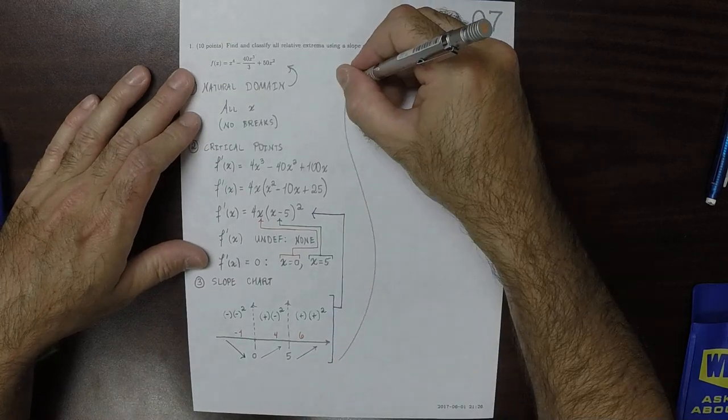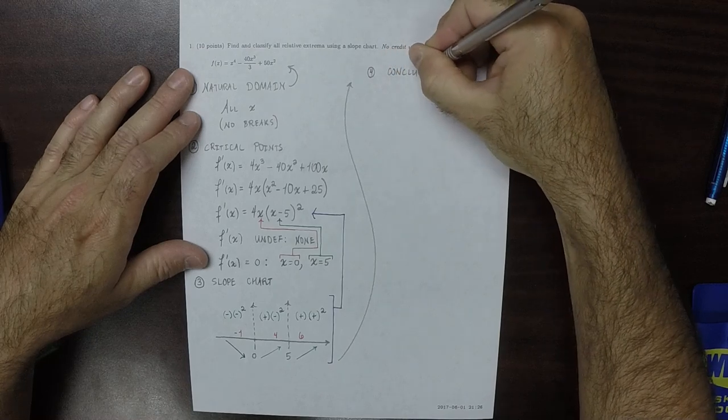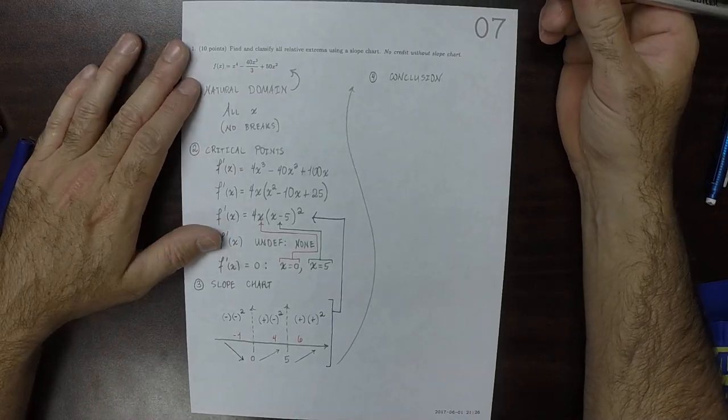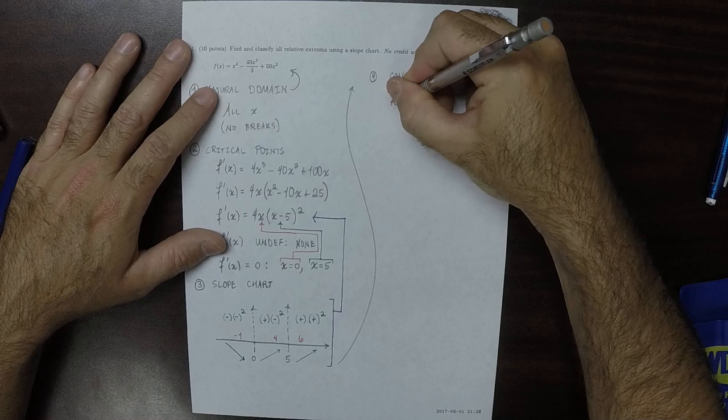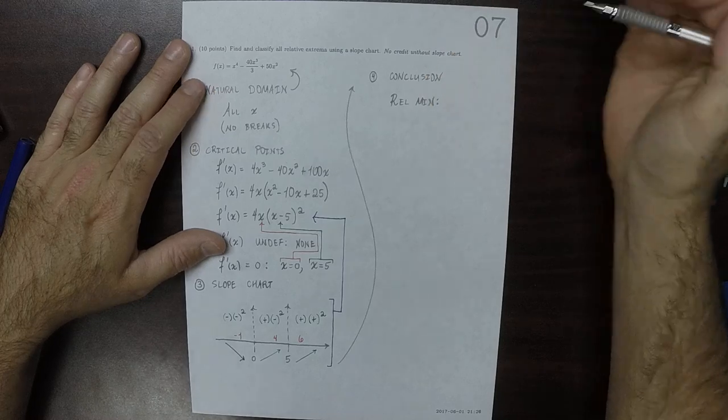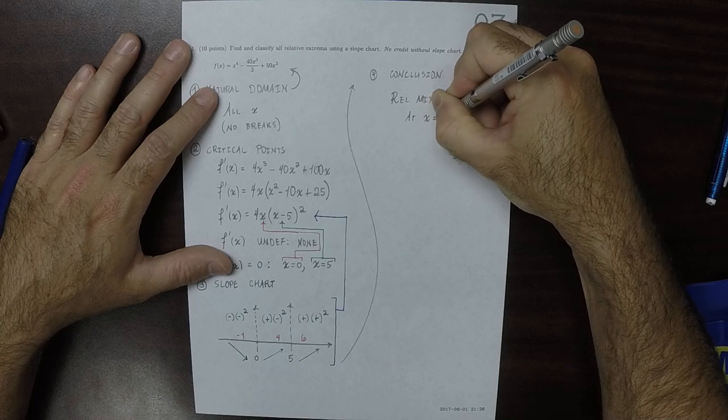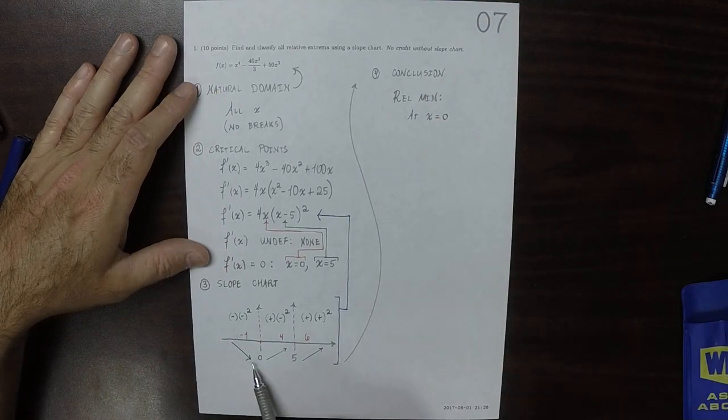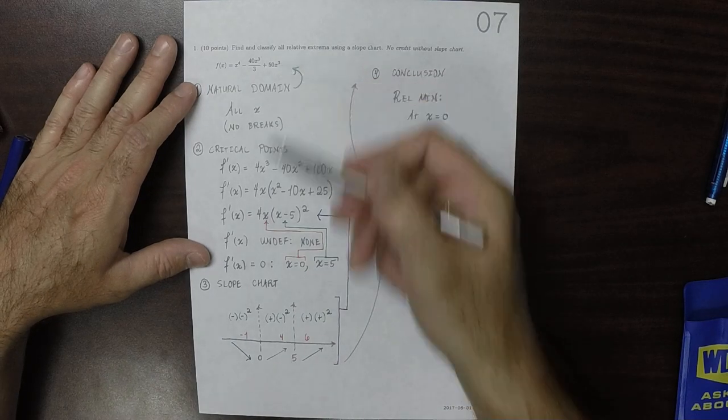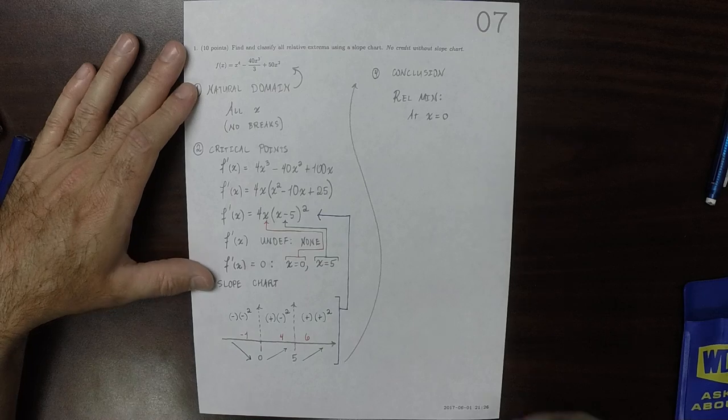Then 4, we're able to make our conclusion. The conclusion is, as for the relative mins, there is a relative min at x is 0. So the reason why is because you can see that the slope changes from decreasing to increasing at 0. And this is a polynomial, so that's not a jump or a missing point or anything. So there's a relative min at x is 0.